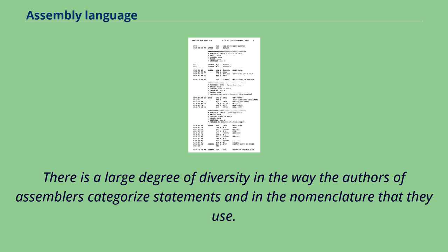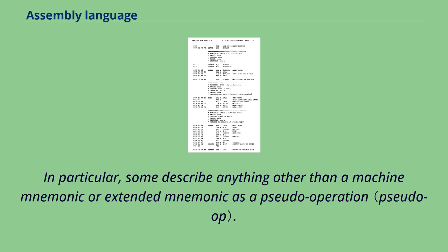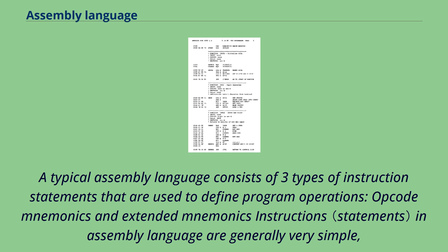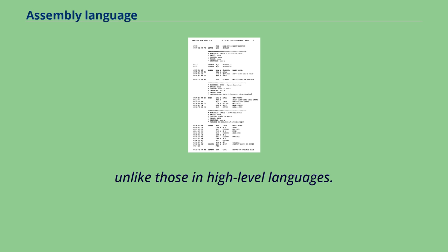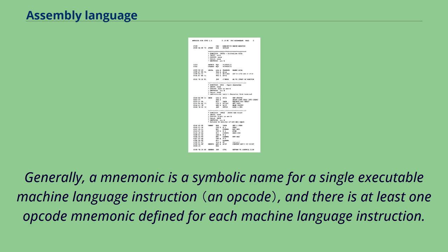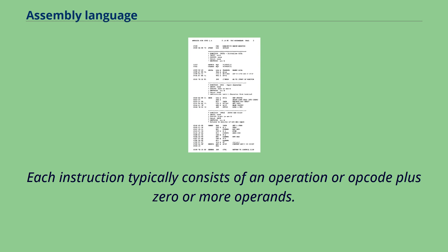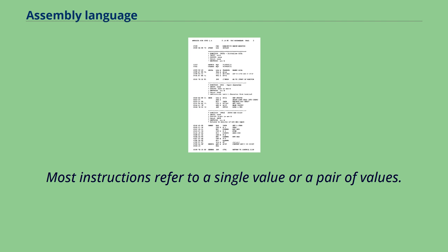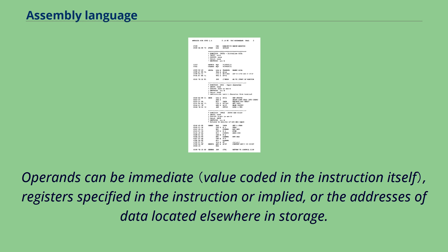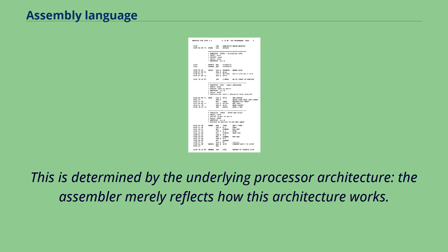There is a large degree of diversity in the way the authors of assemblers categorize statements and in the nomenclature that they use. In particular, some describe anything other than a machine mnemonic or extended mnemonic as a pseudo-operation. A typical assembly language consists of three types of instruction statements that are used to define program operations. Opcode mnemonics and extended mnemonic instructions in assembly language are generally very simple — a mnemonic is a symbolic name for a single executable machine language instruction, and there is at least one opcode mnemonic defined for each machine language instruction. Each instruction typically consists of an operation or opcode plus zero or more operands, and the assembler merely reflects how the underlying processor architecture works.